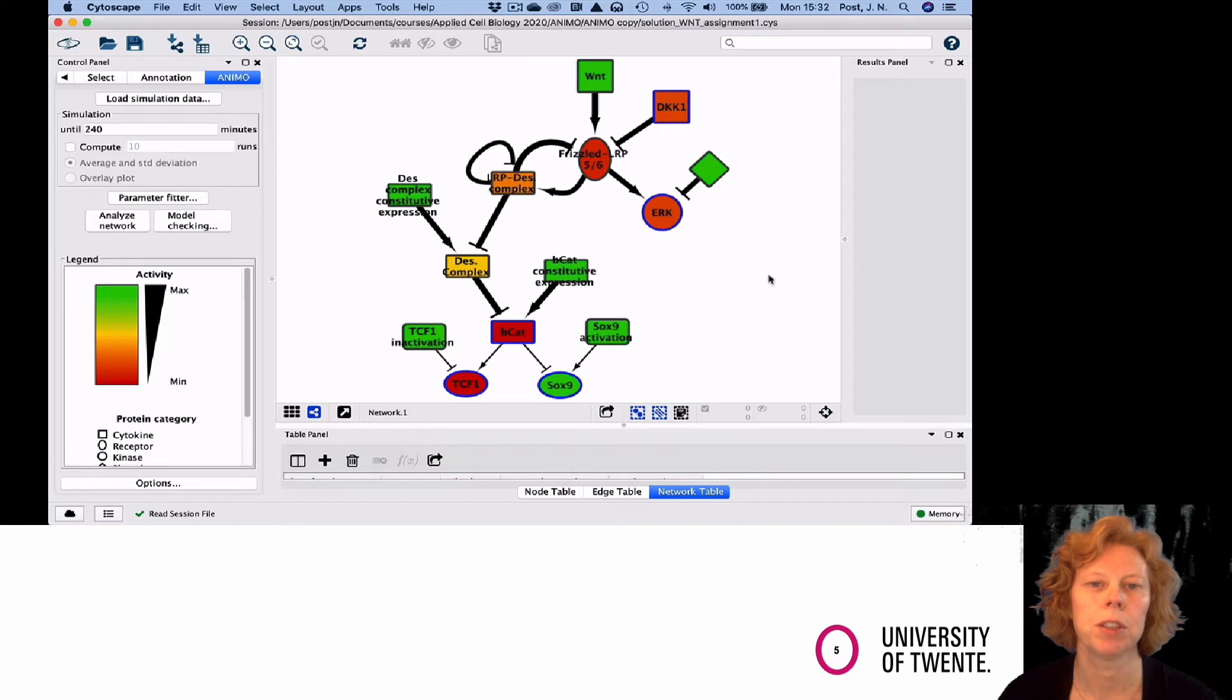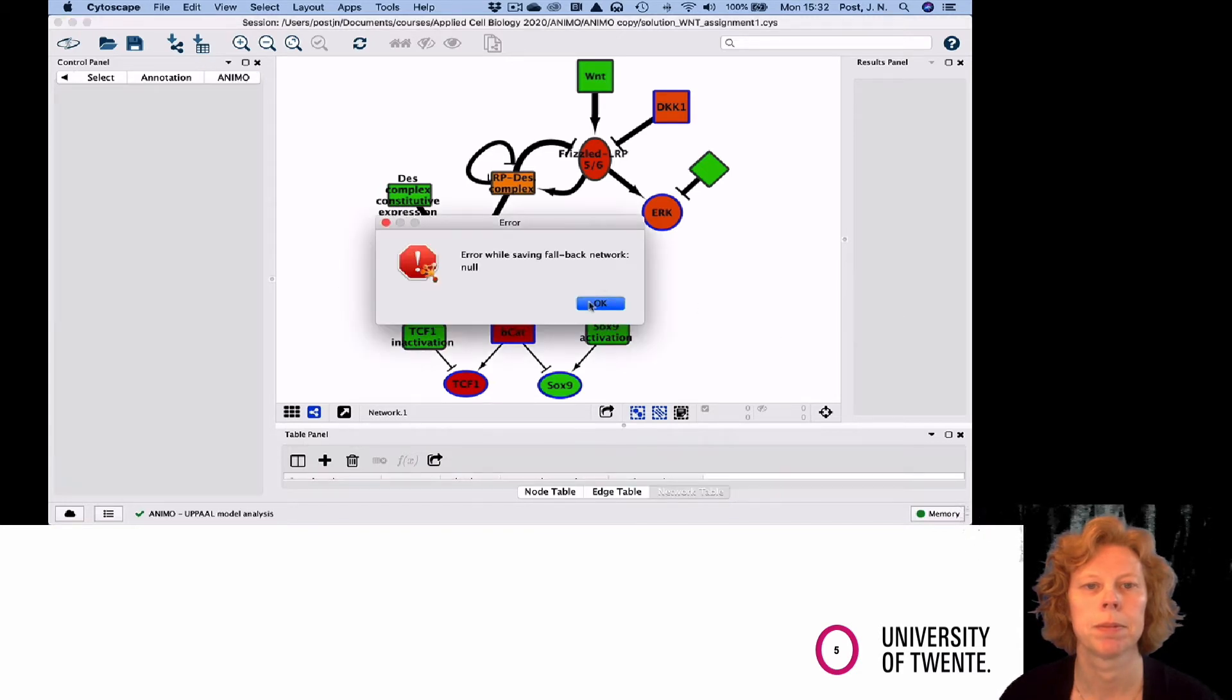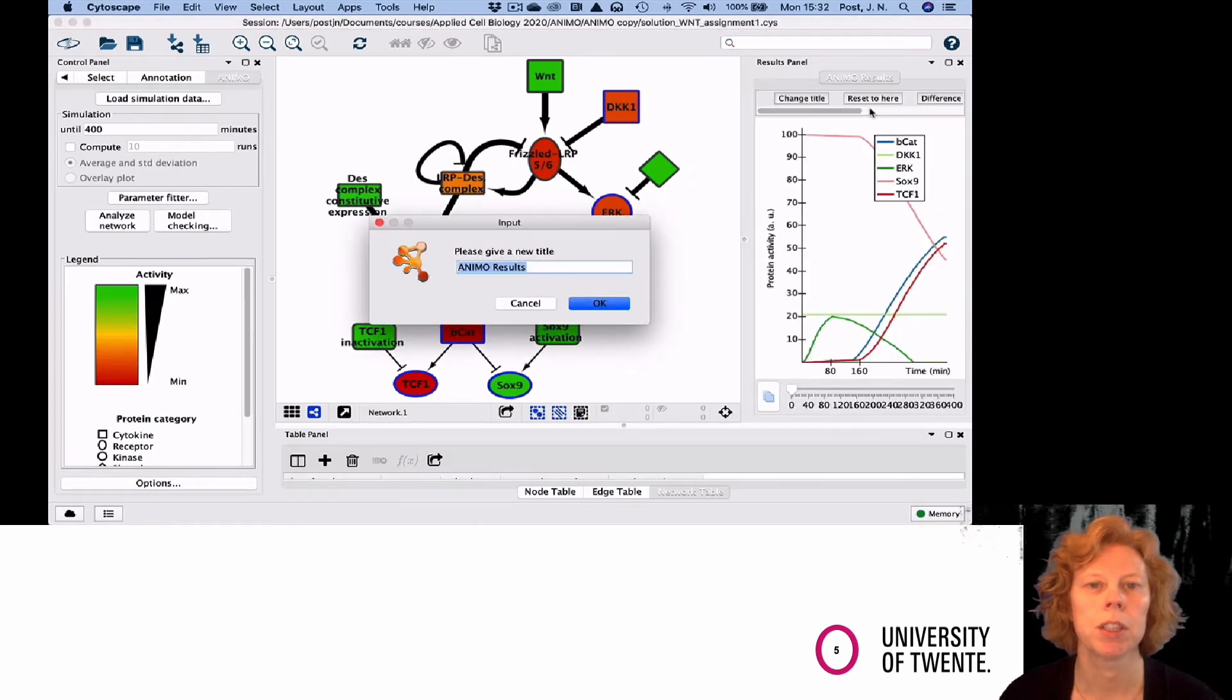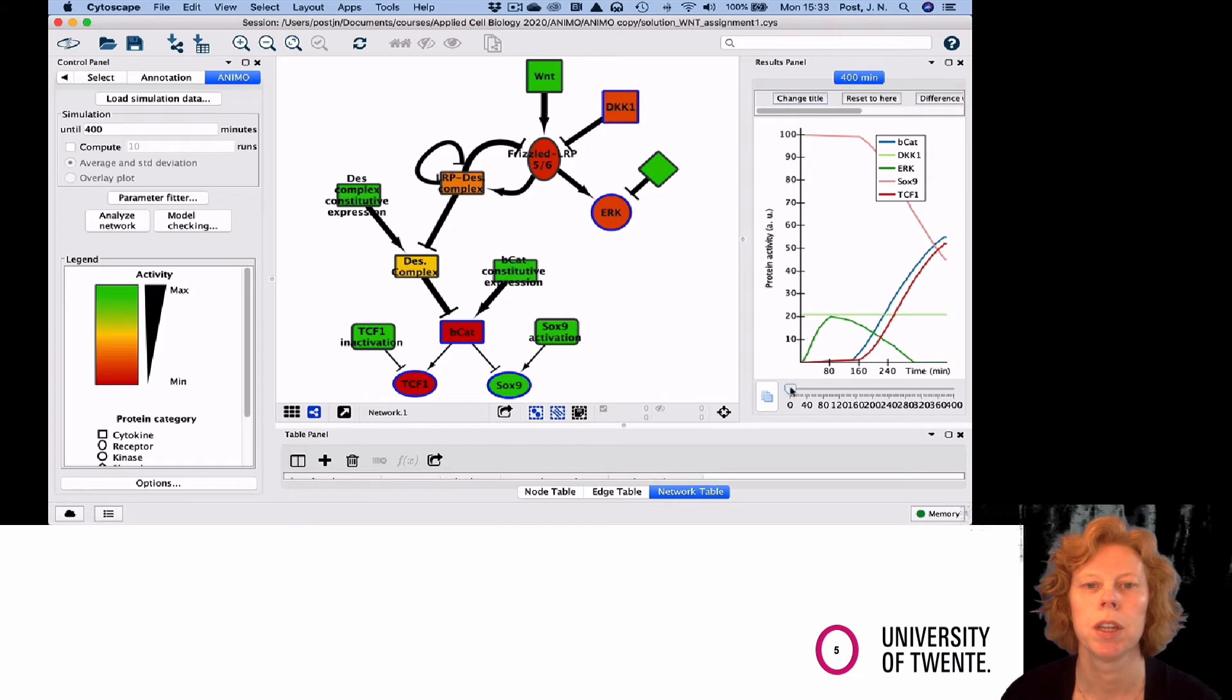Then the first thing you need to do is you have to run the model. It's not so important how long you run it for, but I chose 400 minutes. I always change the title of my results because if you run many simulations, it's hard to keep track. With the slider, you can go through the timing and go to the peak of the arc. What I want to do now is move that peak over. The maximum is now at around 90 minutes, but in the assignment it should be around 60 minutes.